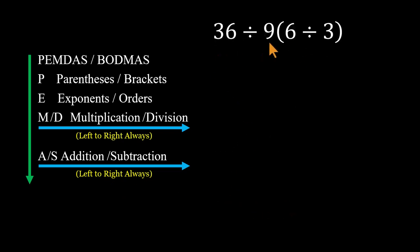All right, let's solve it the right way. Start with the parenthesis, 6 divided by 3 equals 2. Now the expression becomes 36 divided by 9 times 2. Pause here, because this is the moment where most mistakes happen.